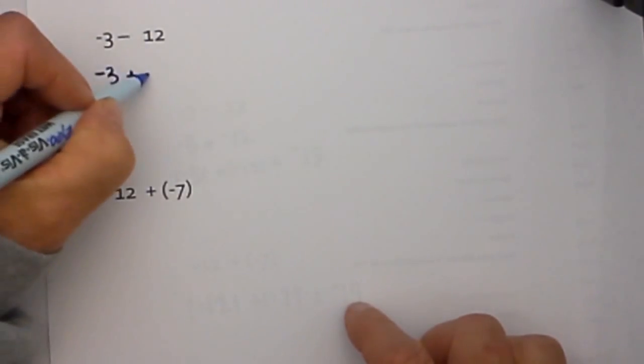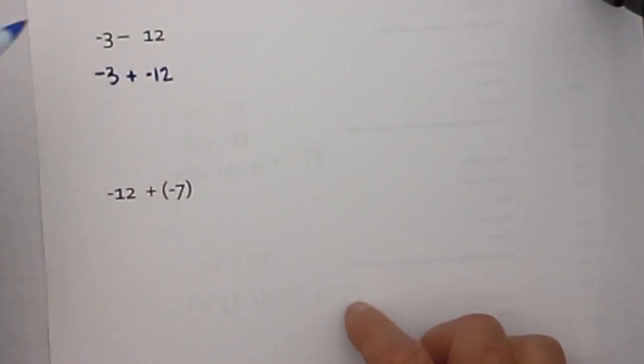So we have negative 3 plus 12. Change the negative to positive and the sign of 12 to negative 12. Now we ask ourselves is the problem addition? Yes. Are the signs the same?